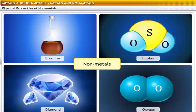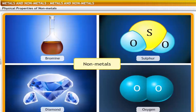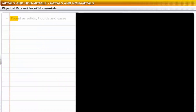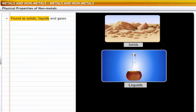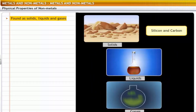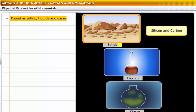Non-metals show properties that are unlike metals; that is, they don't possess metallic properties. Non-metals exist as solids, liquids and gases. For example, silicon and carbon are solids.